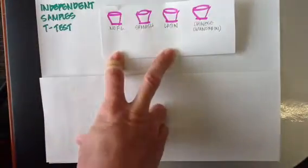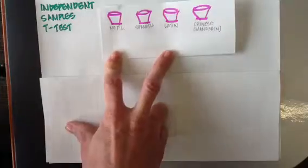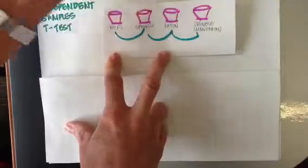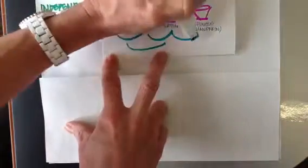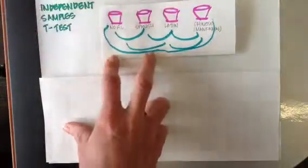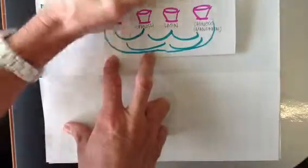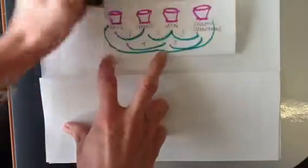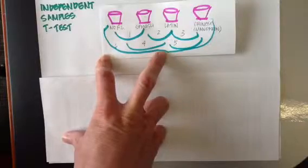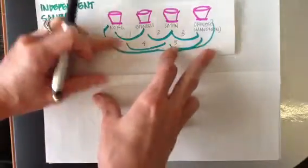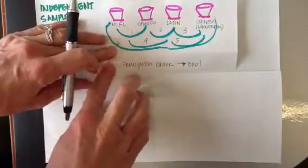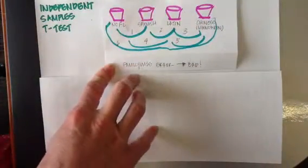The problem with using independent samples t-tests is it can only compare two samples at a time. So if we used it to do this, I'd have to make six different comparisons. And when you make so many repeated analyses, you get what's called family-wise error, and that is bad because it will really interfere with getting true results.